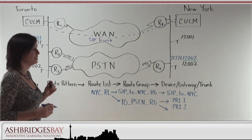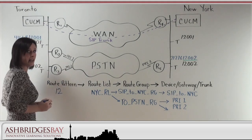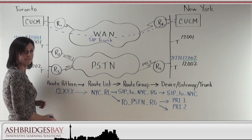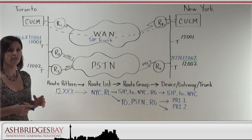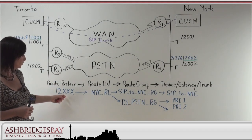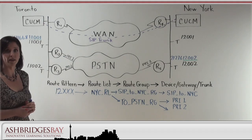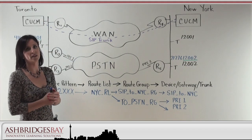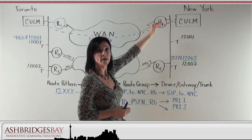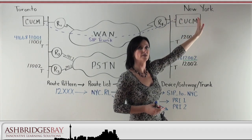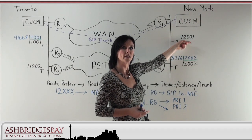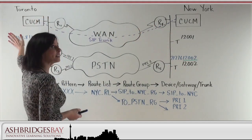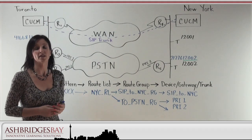We are going to need a pattern for this — we are going to start with 1, 2, X, X, X. So let's imagine I make a call to 12001 from Toronto. I dial 1-2-0-0-1 and I match the pattern in my call manager. The call manager says that's the New York City route list, we want to send that through our first choice, the SIP trunk. So we send those digits over to the call manager in New York City. He gets 12001 and says that's that phone, and uses Skinny to make that phone ring. The phone call is picked up, connects back to Toronto, and all that voice traffic is sent across the WAN.